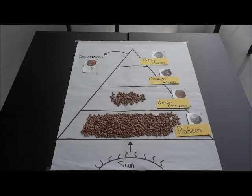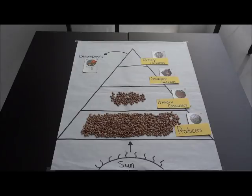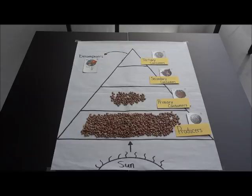Although I have moved 100 beans to the primary consumer level, I want you to remember that the plants and producers are always receiving energy from the sun. So the producers will always be at 100% energy. This energy pyramid is to show you how energy is transferred after something is consumed. So although one plant might be consumed, the rest of the producers that are still living will always have 100% energy because they are always gaining energy from the sun.